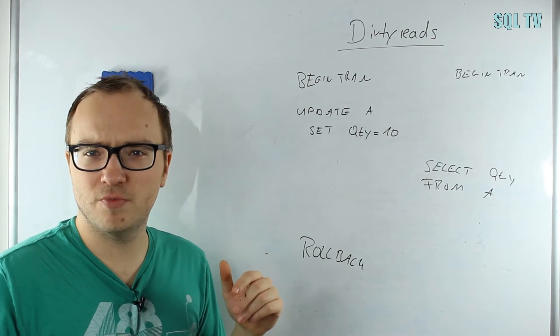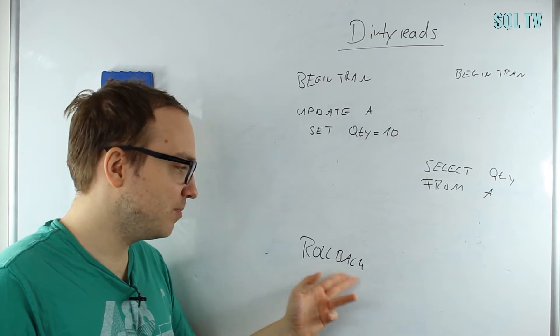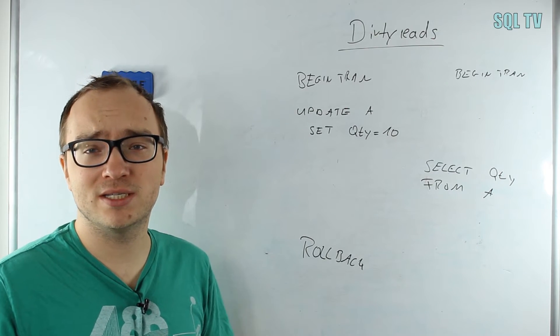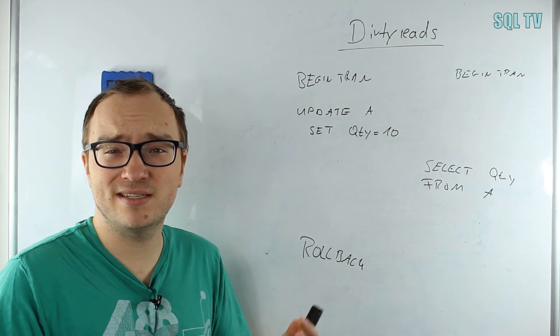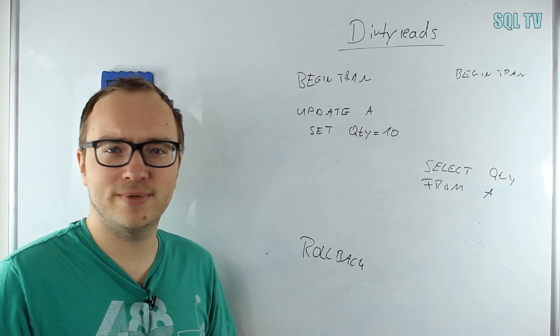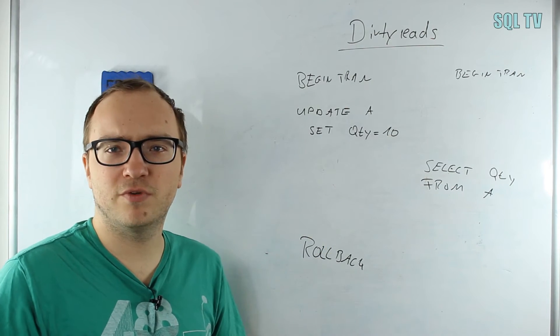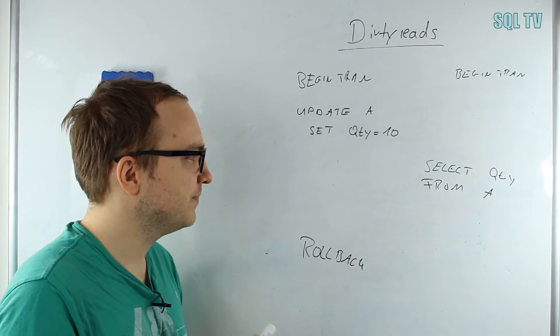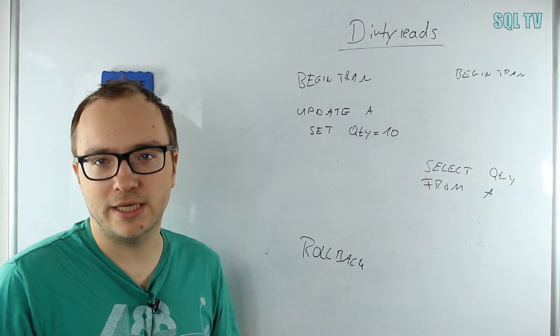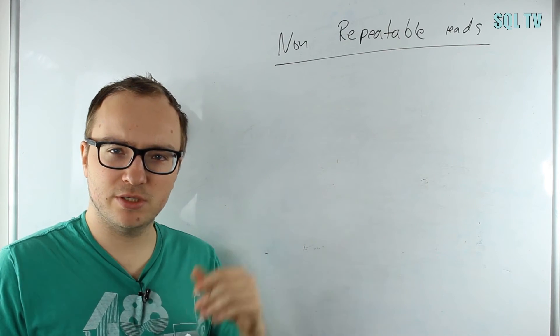If you have a dirty read here, then the 10 is the dirty read because the data was not committed yet. In the end, maybe this transaction does a rollback and this 10 actually was never a consistent logical state of the database—it never existed in the first place since this transaction never wrote it really into the database. It was just a temporary value that was not written into the database, but still this transaction would have read it. This would be a dirty read, dirty because it was not committed yet.